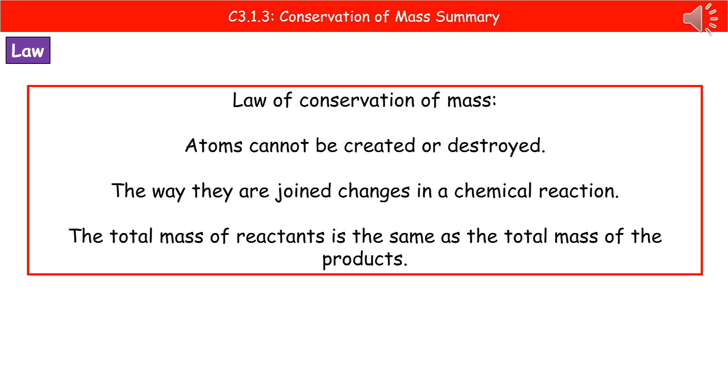We start off with the atoms arranged one way, and then in that chemical reaction, we're going to change how they're then joined together. But what we will find is that because we obviously have exactly the same atoms at the start with our reactants as we do in our products, then the total mass will stay the same.